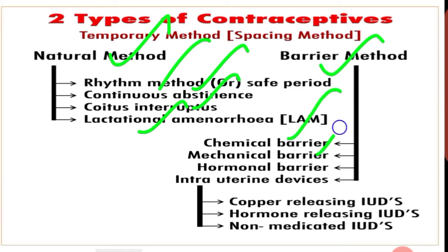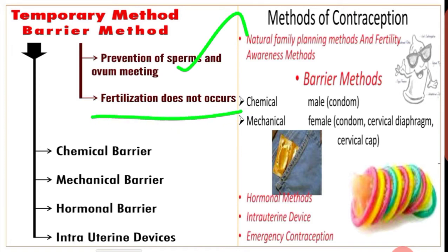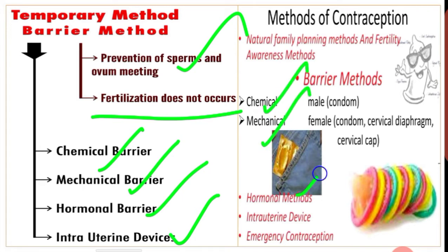Under barrier method, we are going to discuss chemical barrier, mechanical barrier, hormonal barrier, and intrauterine devices. Intrauterine devices include copper-releasing IUDs, hormone-releasing IUDs, and non-medicated IUDs. The barrier method is used to prevent the entry of sperm and its meeting with the ovum, so that fertilization does not occur.